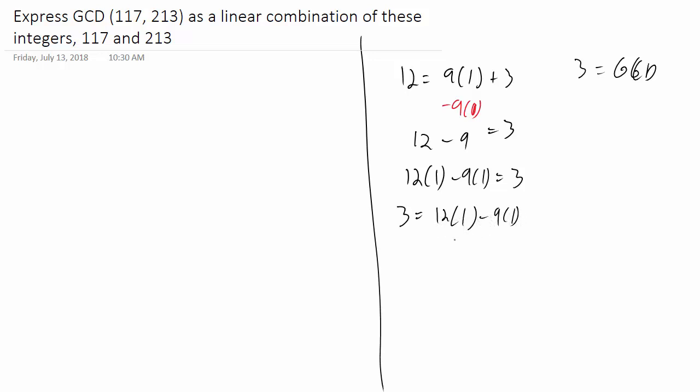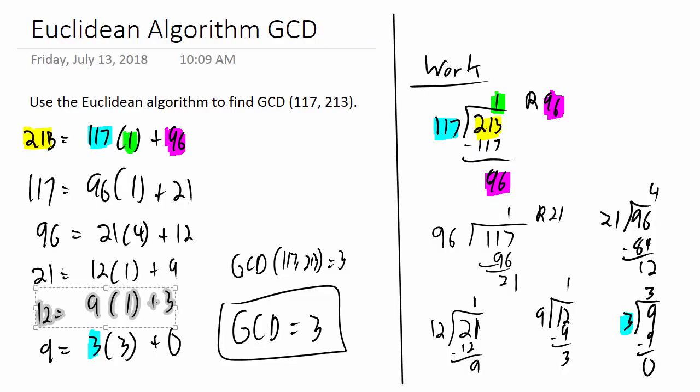This is a linear combination of 12 and 9, which is not at all what we want yet. But it's the first step. I'm just going to rewrite this over here. Instead of actually doing work, I'm just going to look at my previous work. So the previous line is 9 is 21 minus 12.